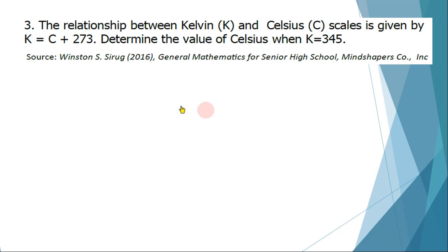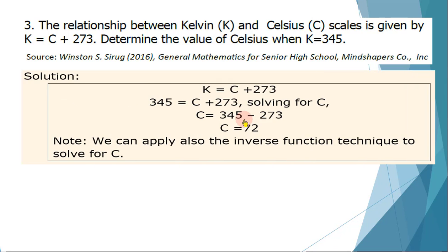For number 3, the relationship between degree Kelvin and degree Celsius scales is given by K = C + 273. Determine the value of Celsius when K is given to be 345. Solution. The given K equated to C + 273. And we have to solve for C. So the degree Celsius in the given K = 345 degree Kelvin is equal to 72 degree Celsius. Note that we can also apply the inverse function technique to solve for C. But in this case, since we can use the best way possible or the most efficient way to solve this problem, we have this solution.